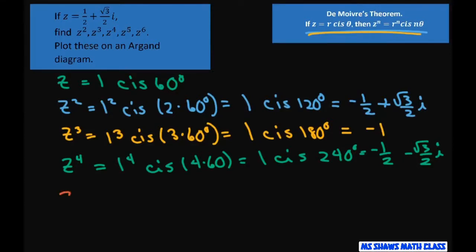For z^5, we get 1^5 cis (5 × 60°), which equals 1 cis 300°, which equals 1/2 - (√3/2)i.